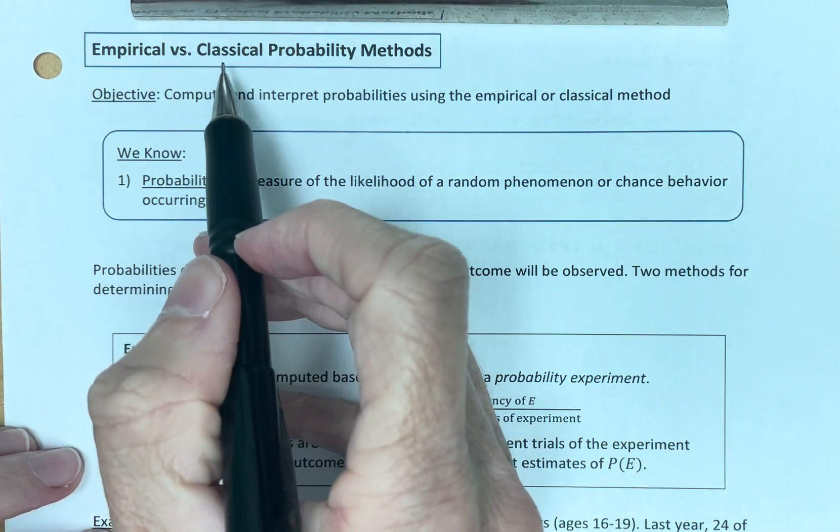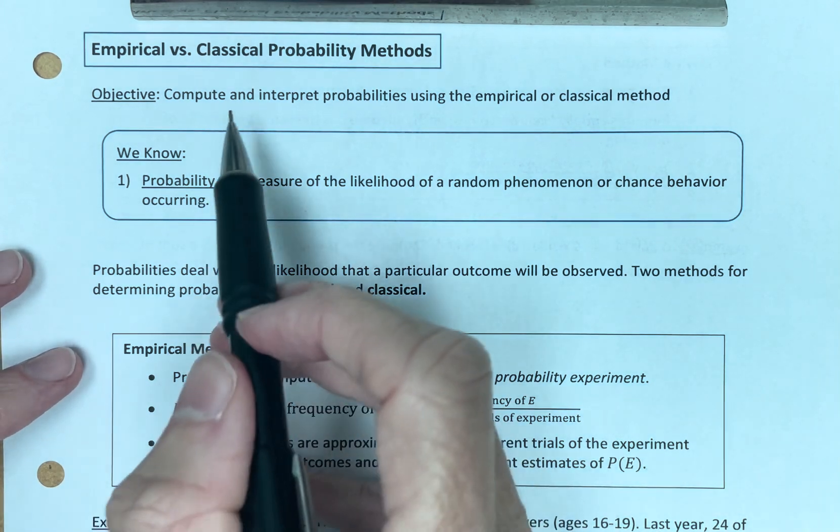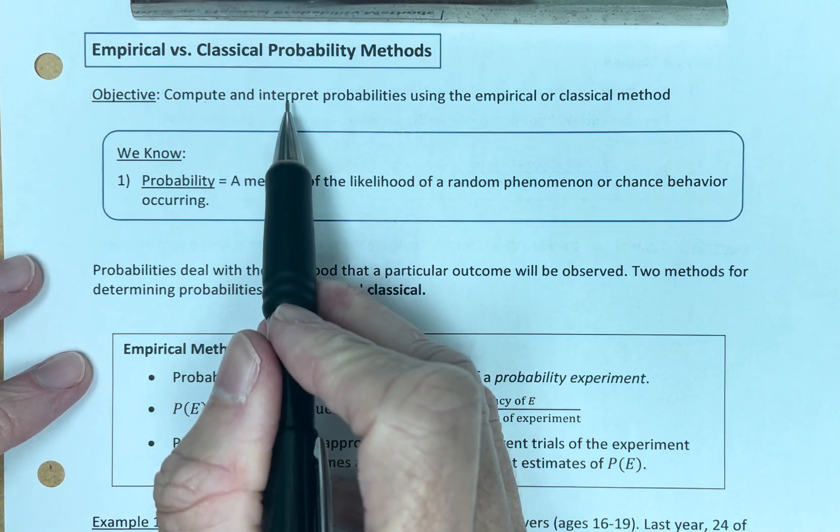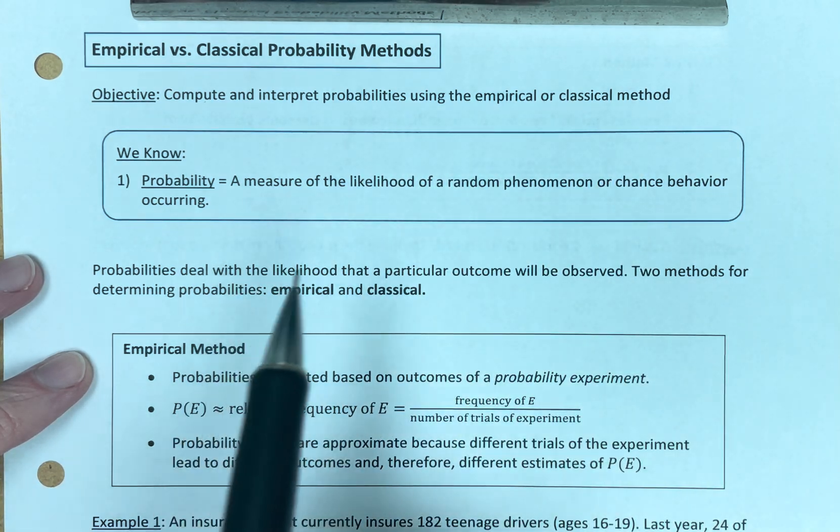Empirical versus classical probability methods. Our objective: compute and interpret probabilities using the empirical or the classical method.